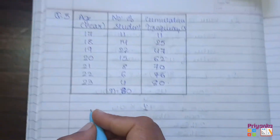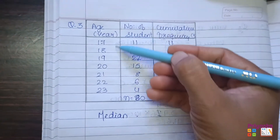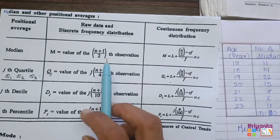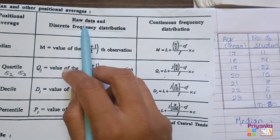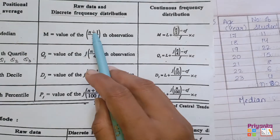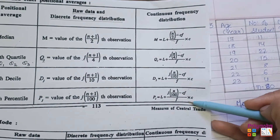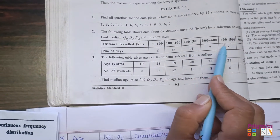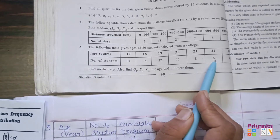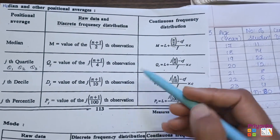The next step is to find the median. The information is given in discrete frequency distribution. For raw data and discrete frequency distribution, we use the formula with plus 1 for the observation. When single numbers are written with no class interval, that is discrete information. So for discrete information we use only this formula.